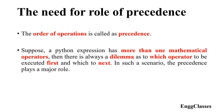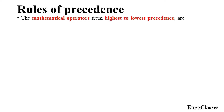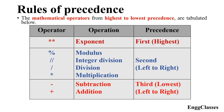When a Python expression has more than one mathematical operator, which operator to execute first and which next — this is resolved by the rules of precedence. Here, we shall consider mathematical operators from highest to lowest precedence as tabulated. The table has three columns: operator, operation, and precedence.